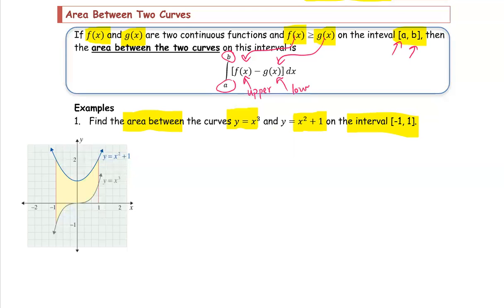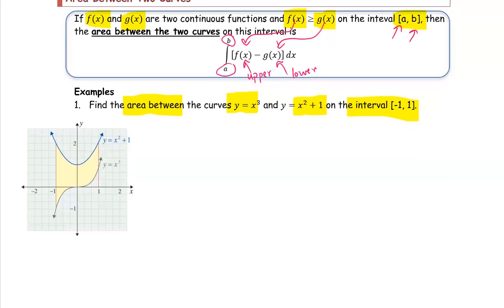Some textbooks call these the upper function and lower function, which is very clear from the graph. To find the area between two curves, set up the definite integration: simplify the integrand, collect like terms as much as possible, then apply the anti-derivative rule. Compute at points a and b and subtract them — that's the routine for finding the definite integration value.